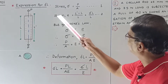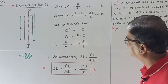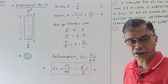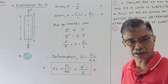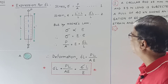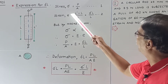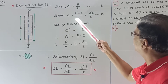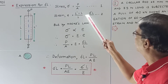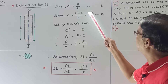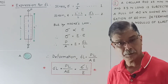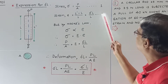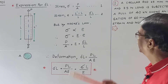Now let us find out what is strain. We know that strain is deformation per unit length, or change in length upon original length. So, change in length will be final length minus original length upon original length. L dash minus L is delta L. This is the second finding.